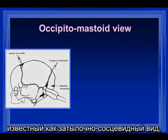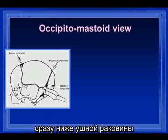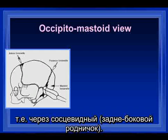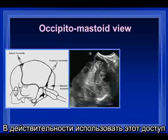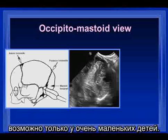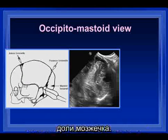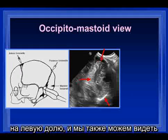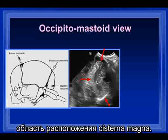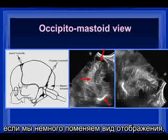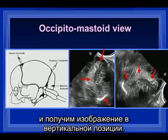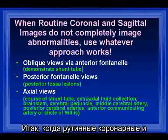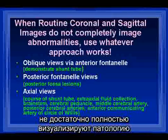Coming out a little farther laterally, we see the area of the insula. We also get another view known as the occipitomastoid view, where we use the probe right behind the ear along the mastoid fontanelle — this is only possible in very young babies. This allows us to see the lobes of the cerebellum: the right lobe, the left lobe, and the area of the cisterna magna, which is a little easier to see in a more vertical presentation.